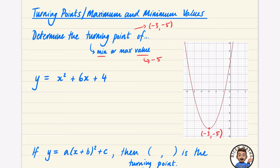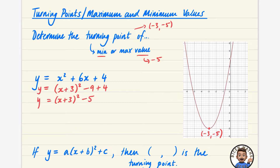How would we find this without drawing the graph? By completing the square. When I complete the square on x² + 6x + 4, I get (x + 3)² - 9 + 4, which is (x + 3)² - 5. So the function is y = (x + 3)² - 5.